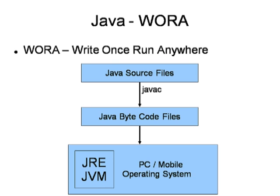This is a basic block diagram. The first basic element is Java source files. After compilation — the basic command is javac — we will get dot-class files. Those dot-class files contain Java bytecodes, and that Java bytecode will operate on JRE. JRE will have JVM and that will perfectly execute the code, whether it is a PC or any mobile operating system. This is the basic reason by which we can execute Java anywhere on any platform.